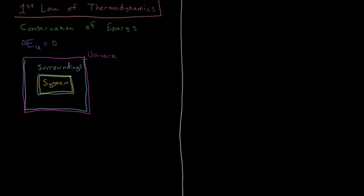The system plus the surroundings equals the total universe. So if the energy change of the universe is zero, then if there's some process which changes the energy of either the system or the surroundings, we know that the change in energy of the system plus the change in energy of the surroundings must equal zero, because the sum of those two is the change of the energy in the universe.